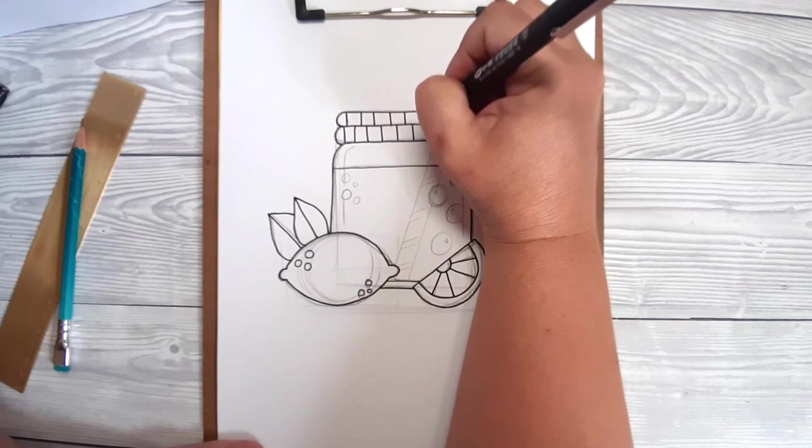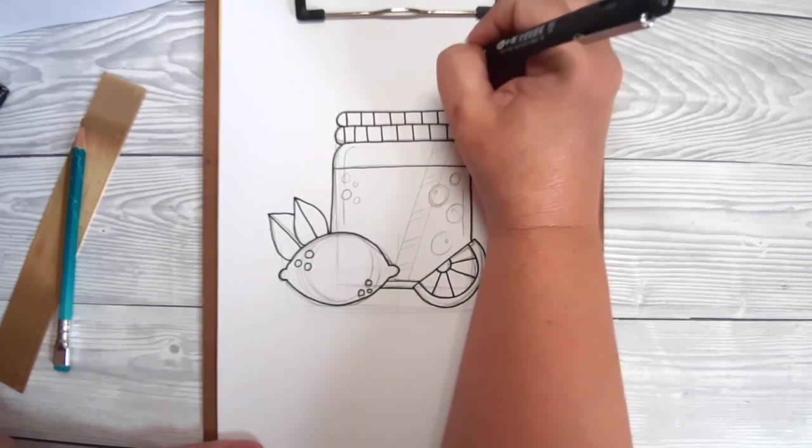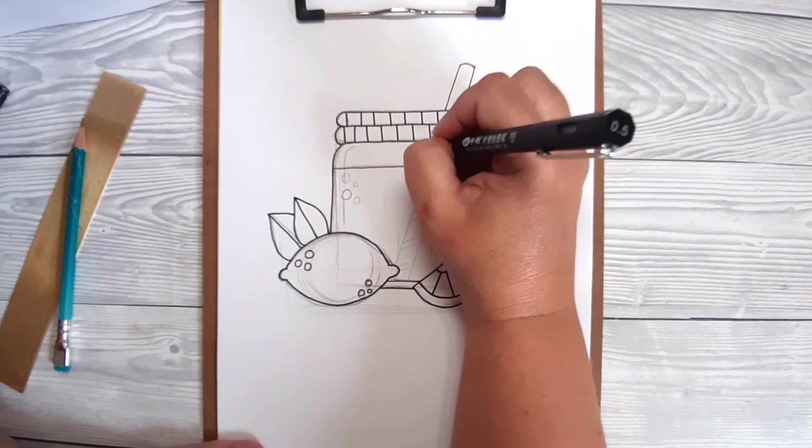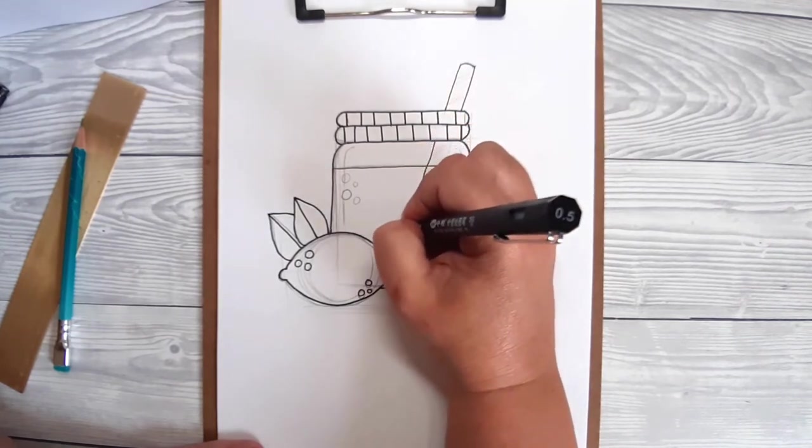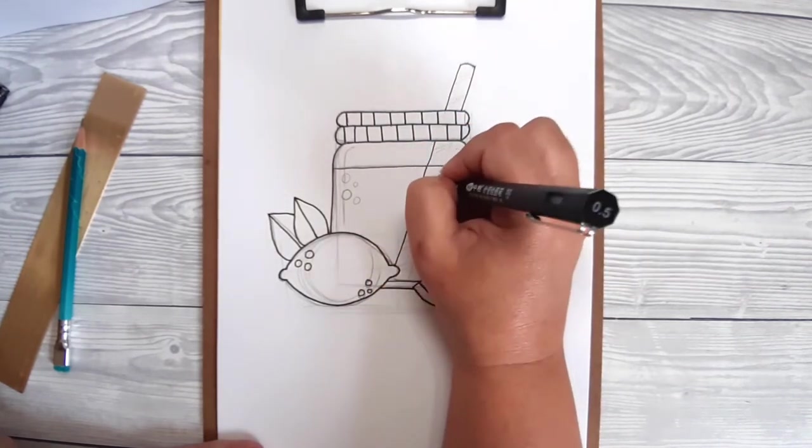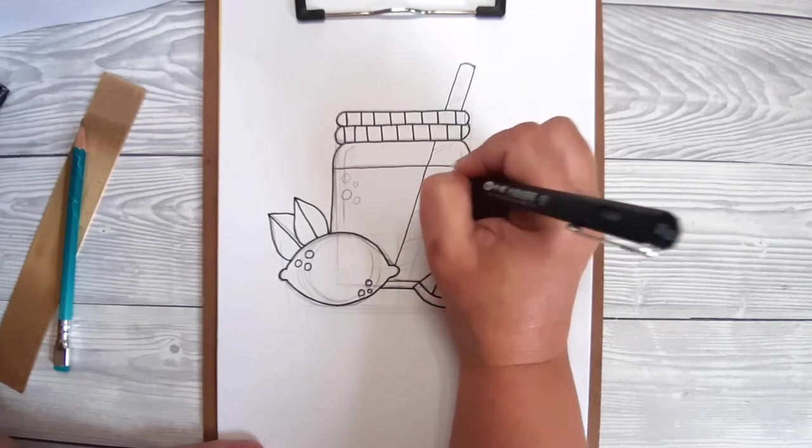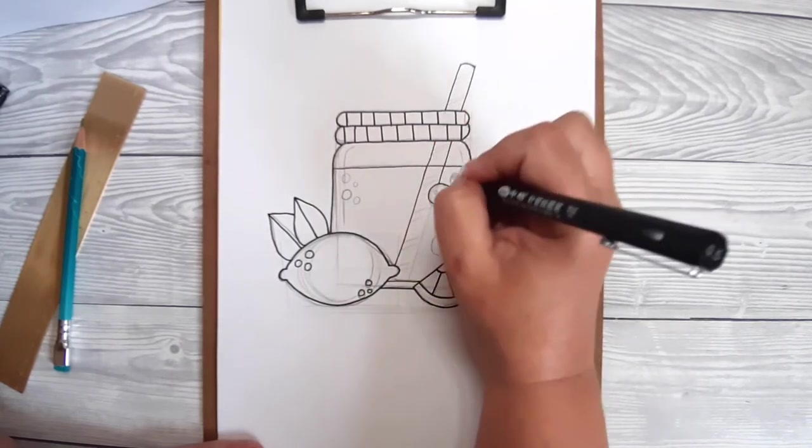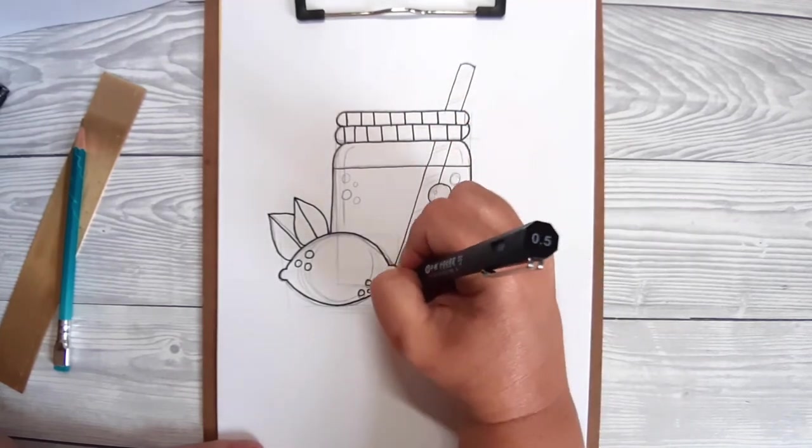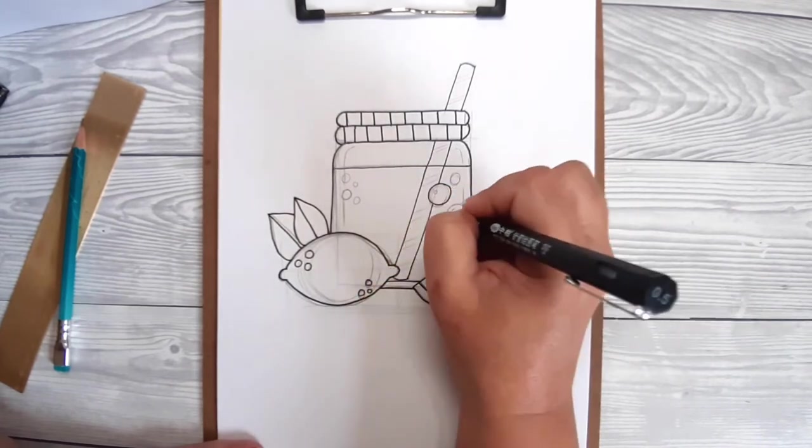So I used the ruler when I did the pencil version of the straw, but again to fit it in with the cartoony style I didn't want anything too angular. Because I have the pencil lines to follow now, I'm going to freehand over the top of them so that it doesn't look too straight.